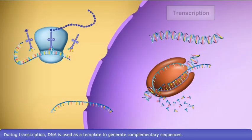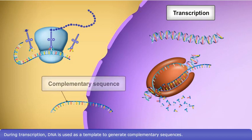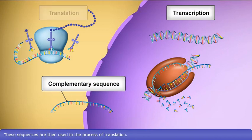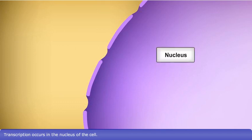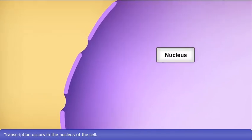During transcription, DNA is used as a template to generate complementary sequences. These sequences are then used in the process of translation. Transcription occurs in the nucleus of the cell.